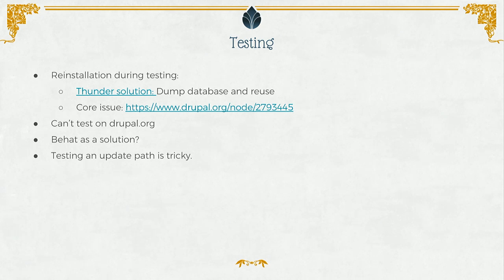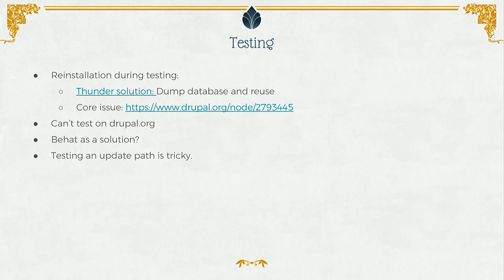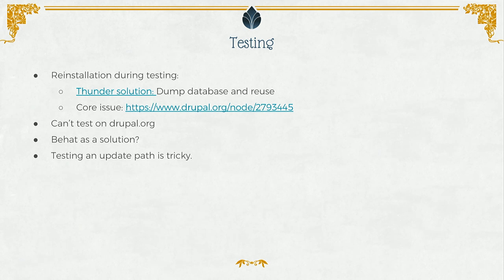The other approach is using Behat — I think Lightning is using that. Now that he told me about database dumps I'm kind of thinking we should do that too. We do a clean install of the distribution, dump it, and then reuse that same dump for every test so we can ensure every scenario starts from the same point. That helps both with performance and ensuring that every scenario will start from the same starting point.